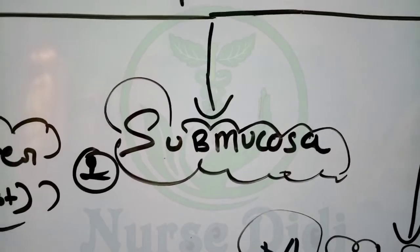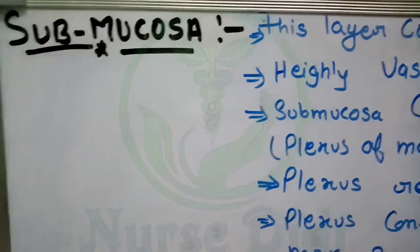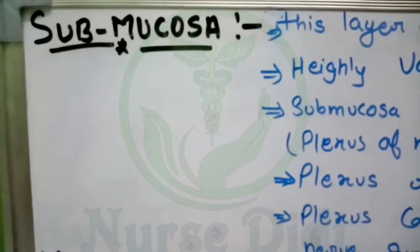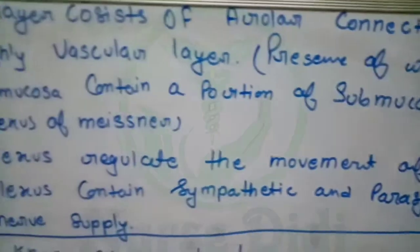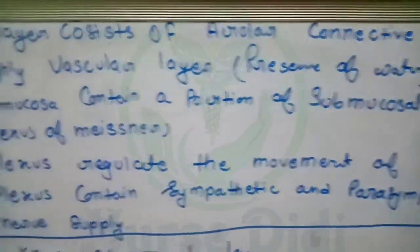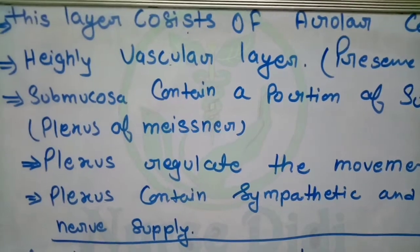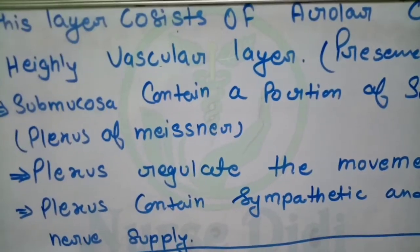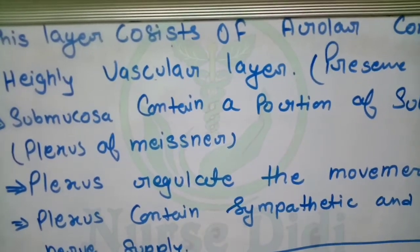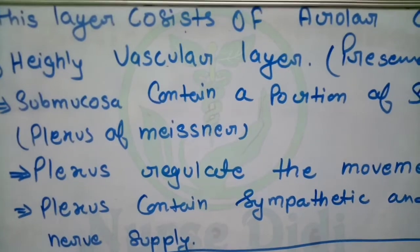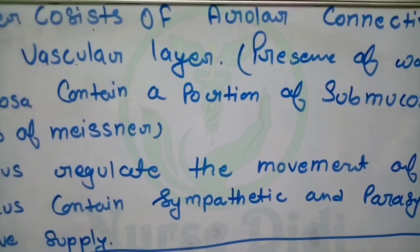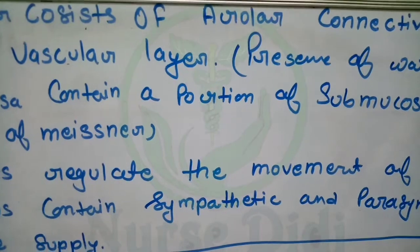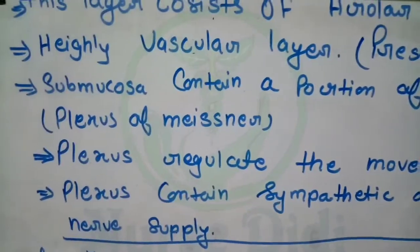Let's start our second layer - the sub-mucosa layer. This layer consists of areolar connective tissue and some lymphatic fluid. There are many vessels here - whether blood vessels or lymphoid tissue. This is a vascular layer where vessels are more present.